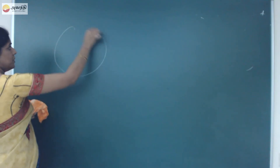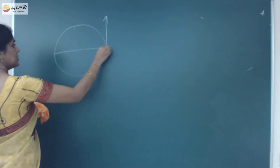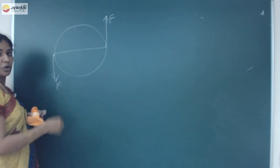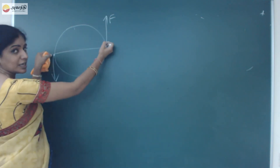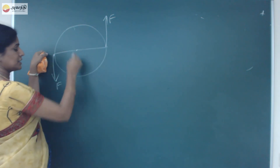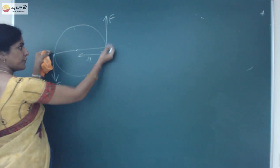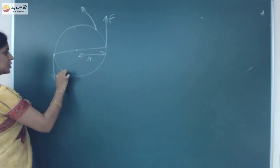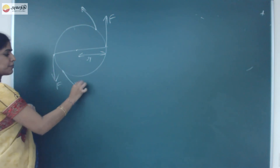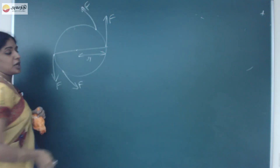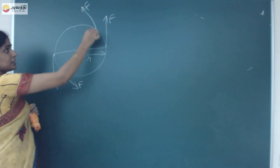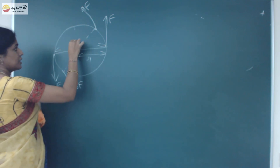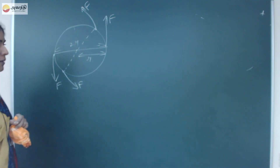Another example: there are two forces acting at two points on a car steering wheel. The two forces are of equal magnitude but act in opposite directions. This is the center, and let R be the radius. The perpendicular distance between the two forces is the diameter, which is 2R.